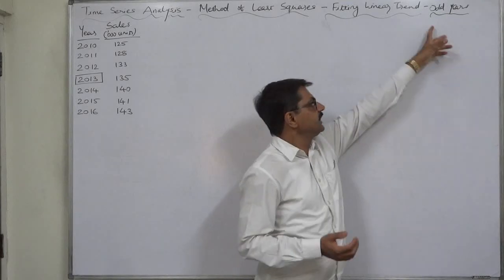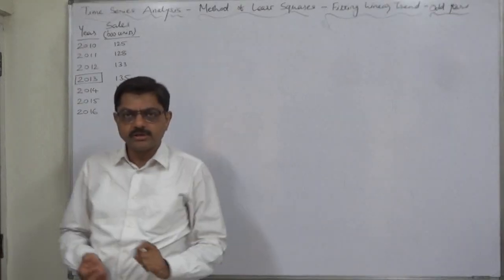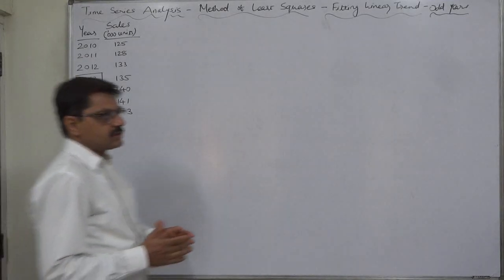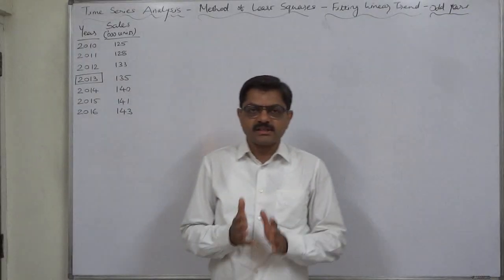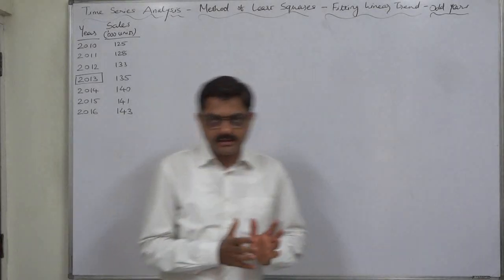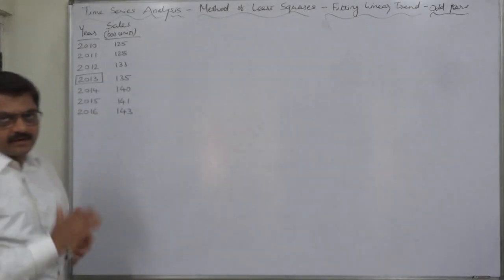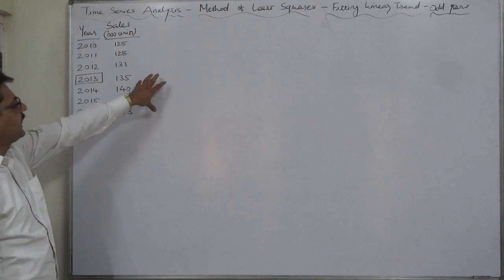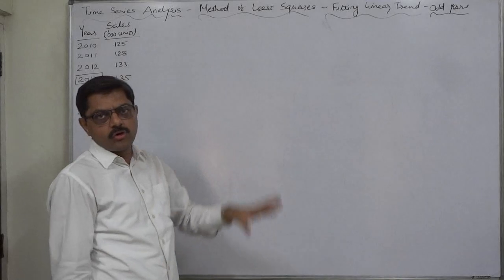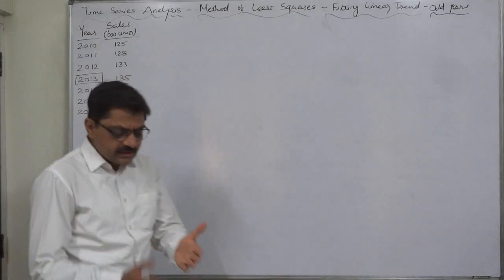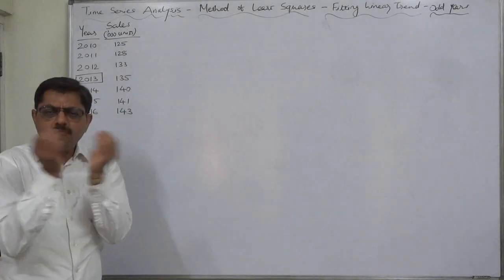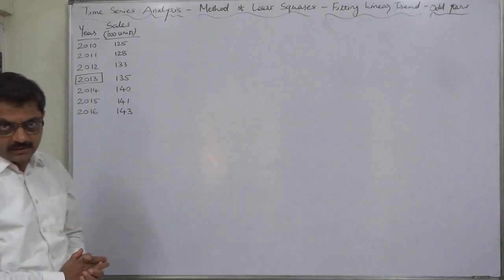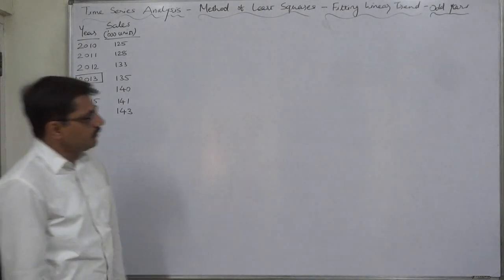This time we are going to learn fitting a linear trend. I have added some words: odd years or odd periods, broadly periods. This is a classification which I would prefer. First of all we are going to study the cases where there are odd number of years or odd number of periods, because determination of X is somewhat different in case of odd number of periods and even number of periods.